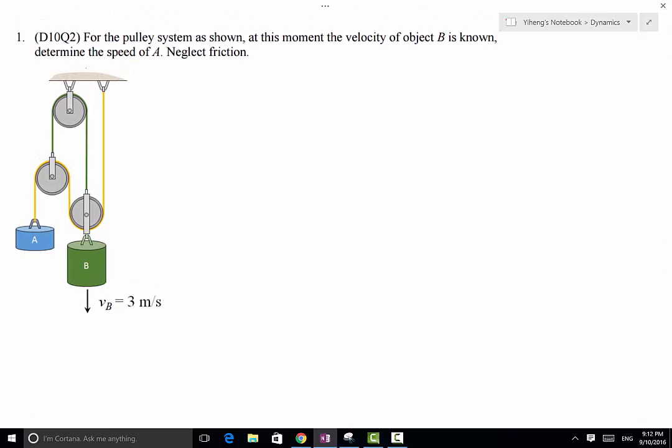This is a dependent motion analysis problem. The first thing we want to do is establish a datum. A datum is always drawn at a fixed location. Of course you can draw your datum from the roof, but because this distance right here is fixed, the datum that I drew works well and actually helps with the later calculation.